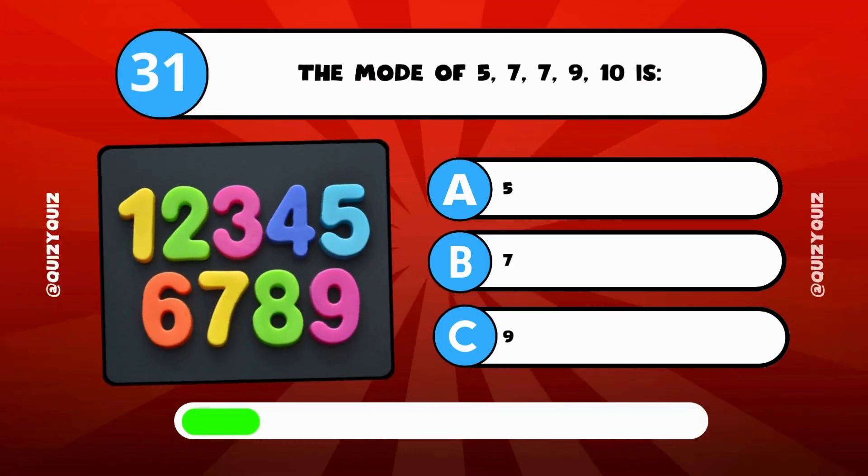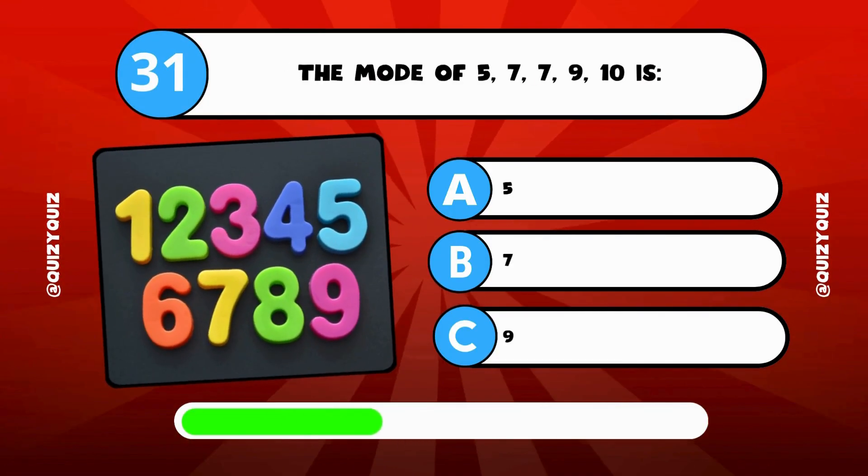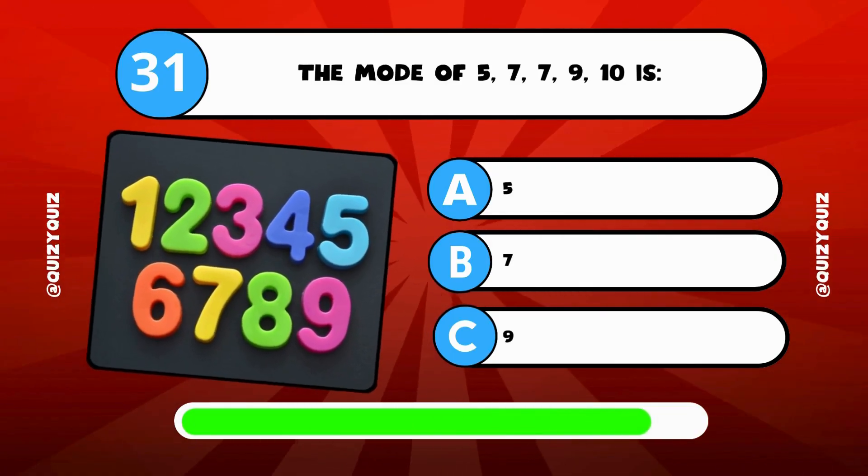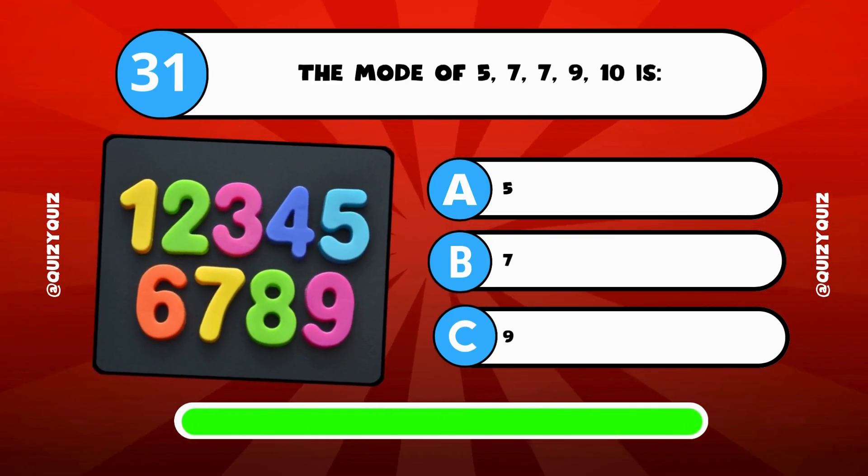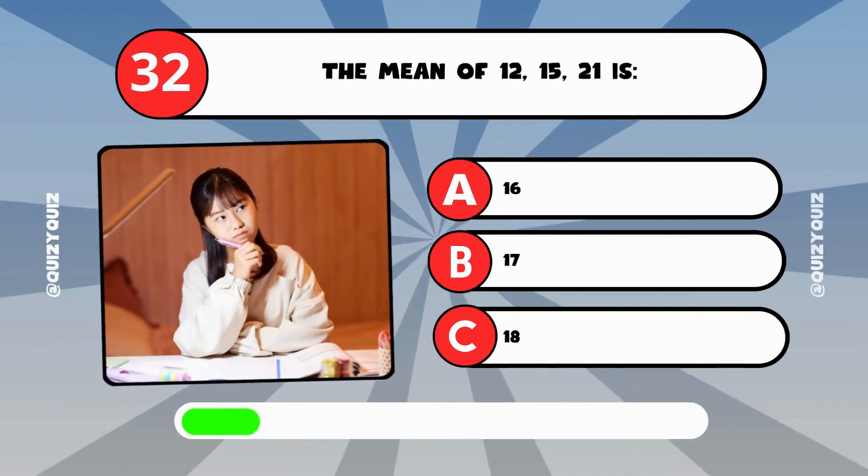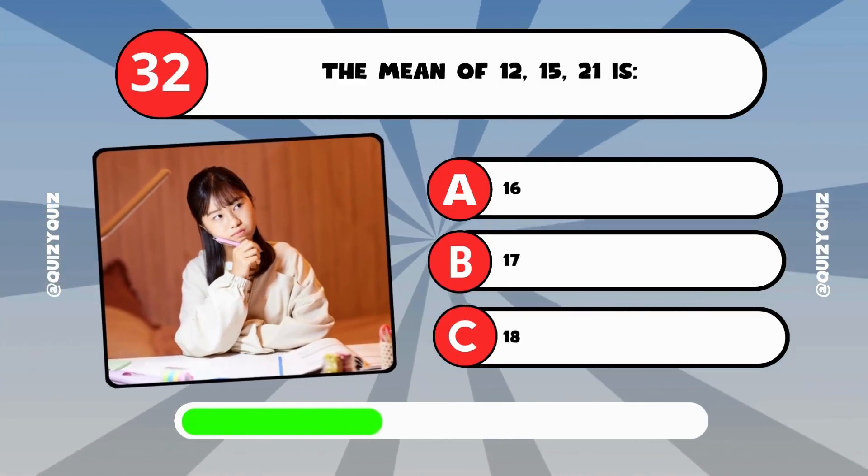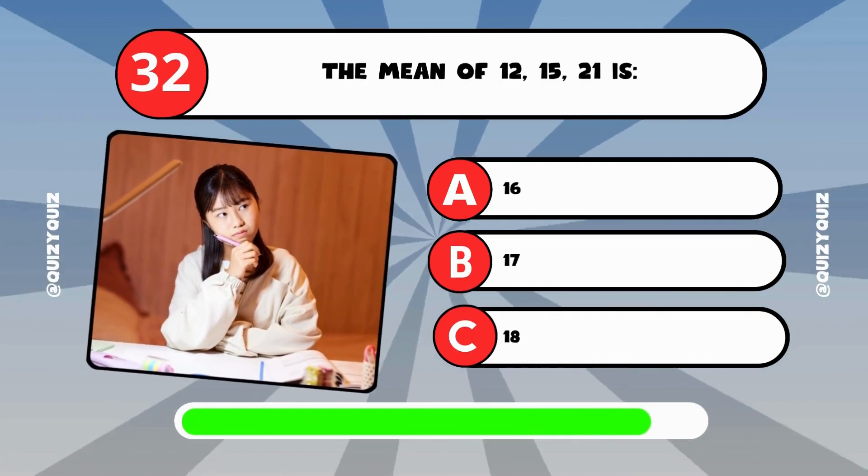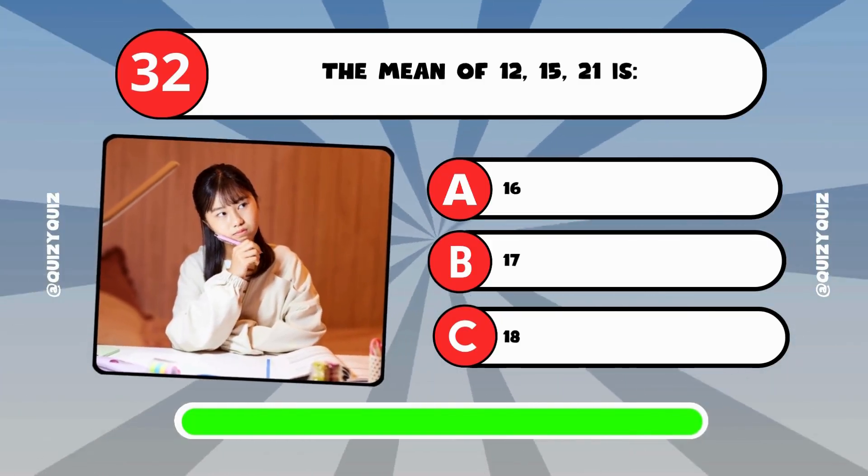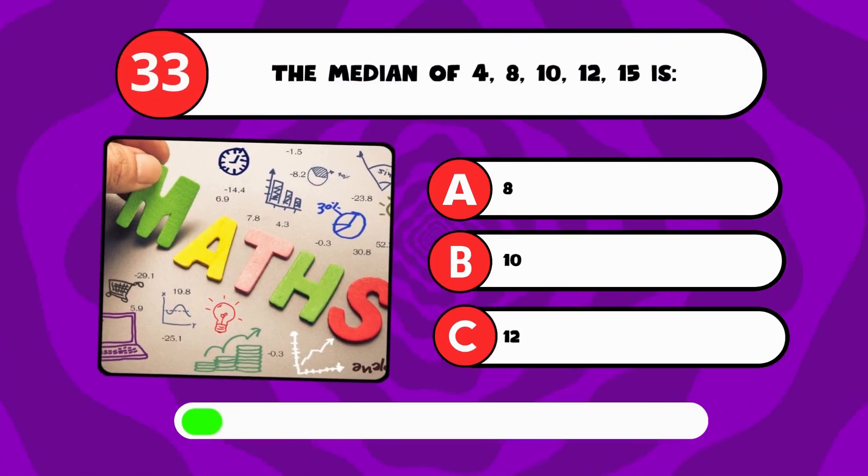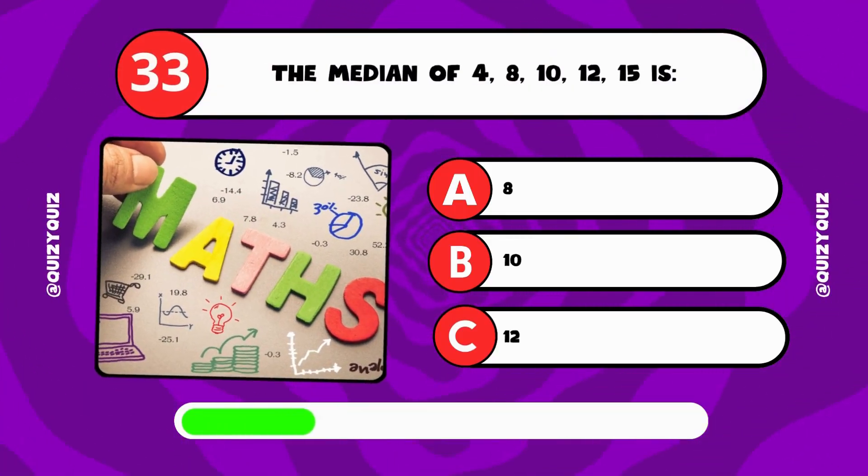The mode of 577910 is. The median of 4, 8, 10, 12, 15 is